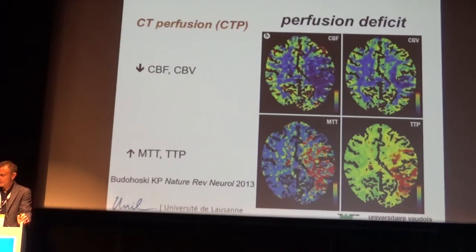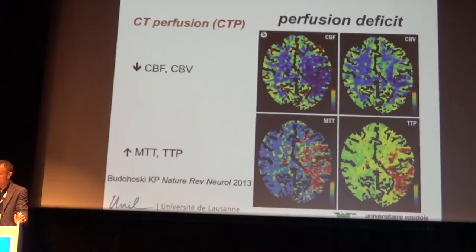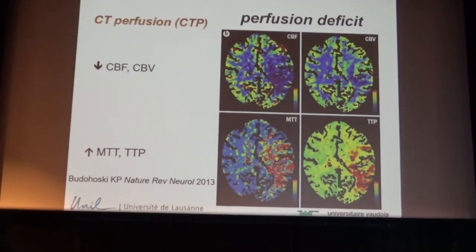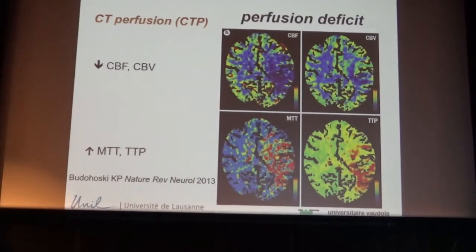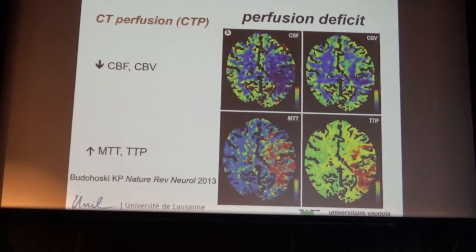On CT angiography and CT perfusion you can see the infarct zone, and around it a penumbra zone with vasodilation and increased mean transit time — a classic ischemic penumbra. You may intervene by raising blood pressure and optimizing brain perfusion to avoid additional tissue loss, which is obviously detrimental for outcome. This illustrates the importance of knowing imaging well for patient management.